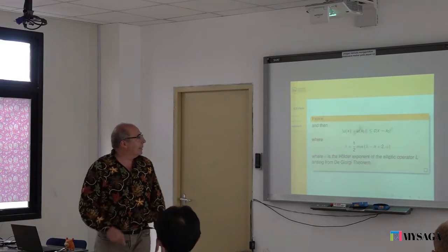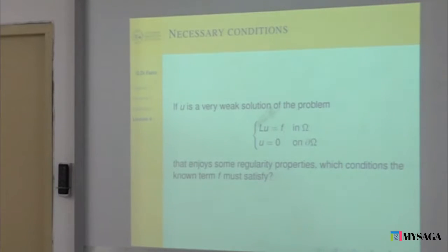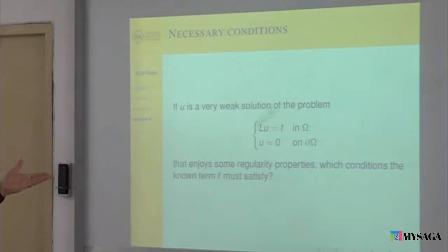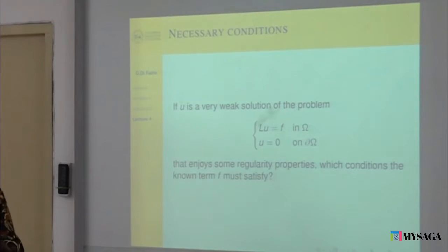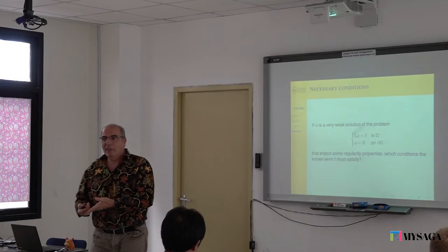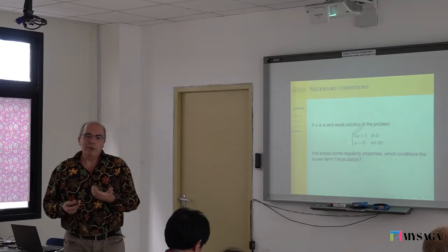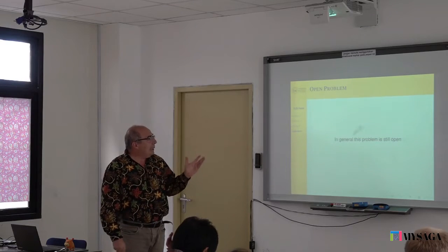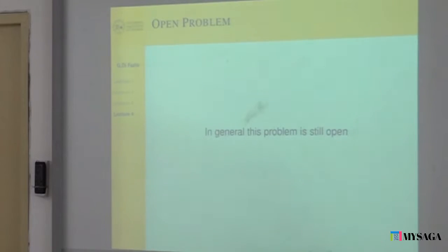This means that we could be given a degree of regularity and then deduce what F can be put into the problem. So if I want a continuous function but I choose a bad right-hand side, I cannot have a continuous solution. This point would be very interesting, but in its full generality, the problem is still unsolved.